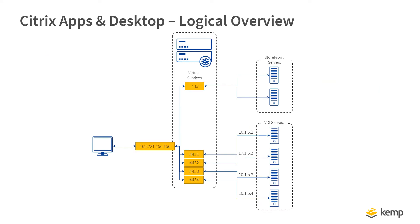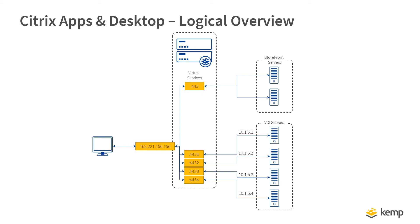Let's look at what a typical deployment might look like. We have a single public IP address on the Loadmaster, which is configured with a virtual service to load balance standard TLS connections on port 443 to the storefront servers. Each VDI server has a virtual service defined on an unreserved port number that forwards all traffic to the private IP address.